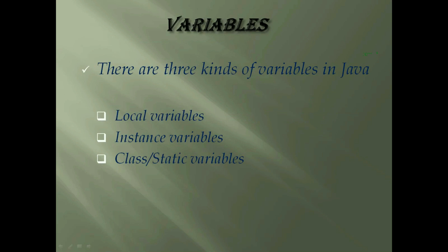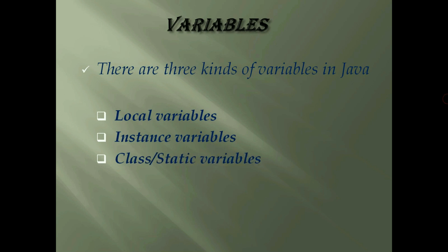There are three kinds of variables in Java. These are local variables, instance variables and class static variables. First, we will discuss about local variables.